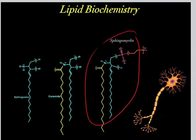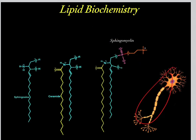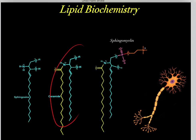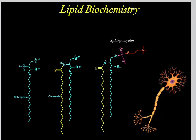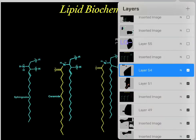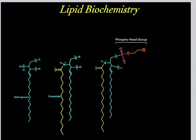Sphingomyelin is extremely important to build the myelin sheaths in our neurons. So we build this sphingomyelin from this ceramide compound, which came from this sphingosine backbone. We refer to this as the phospho head group, which we added to this hydroxyl group — also referred to as the hydroxyl head group.